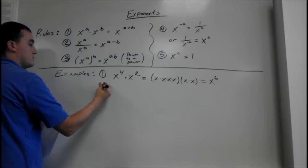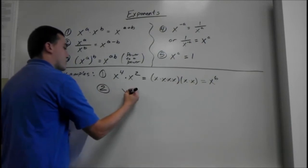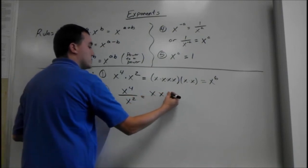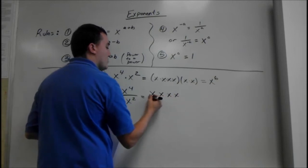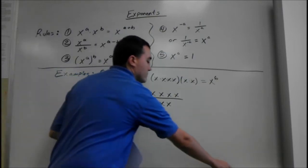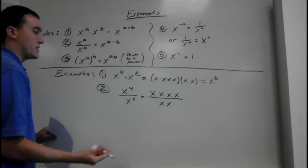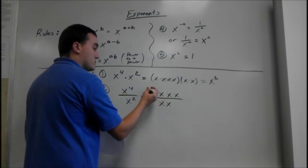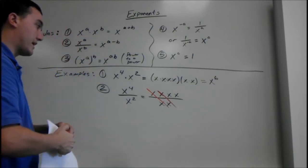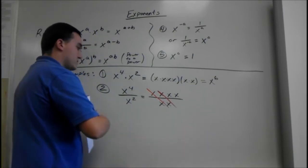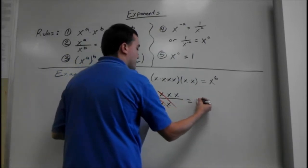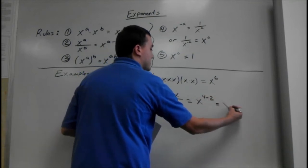Another example: say we have x to the fourth over x squared. That would be four x's multiplying over two x's. We can cancel two of these out, so we just have two left — x times x is x squared. When we're dividing, we can think of it as canceling, but really subtracting is easier: x to the fourth minus two gives us x squared.